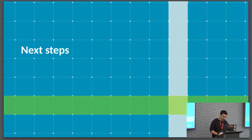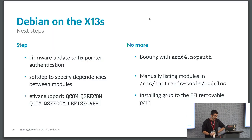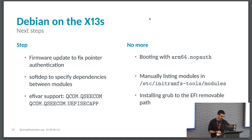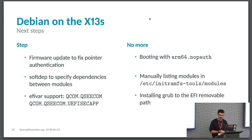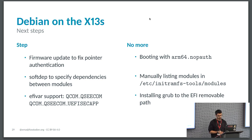What are the next steps for the X13S? Once we get firmware that fixes pointer authentication, we can stop booting with arm64.nopauth. Using softdeps would let us properly specify dependencies between kernel modules so we don't have to manually list them in the initramfs. And once the two EFI variable kernel modules land in a production kernel, we won't need to tell the installer to put Grub in the EFI removable path—we'll have full EFI variable support.